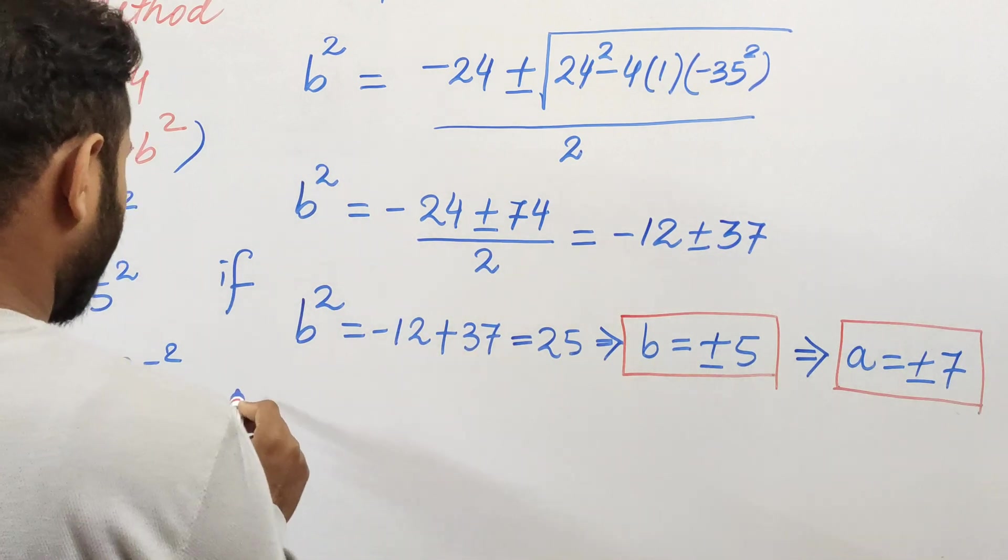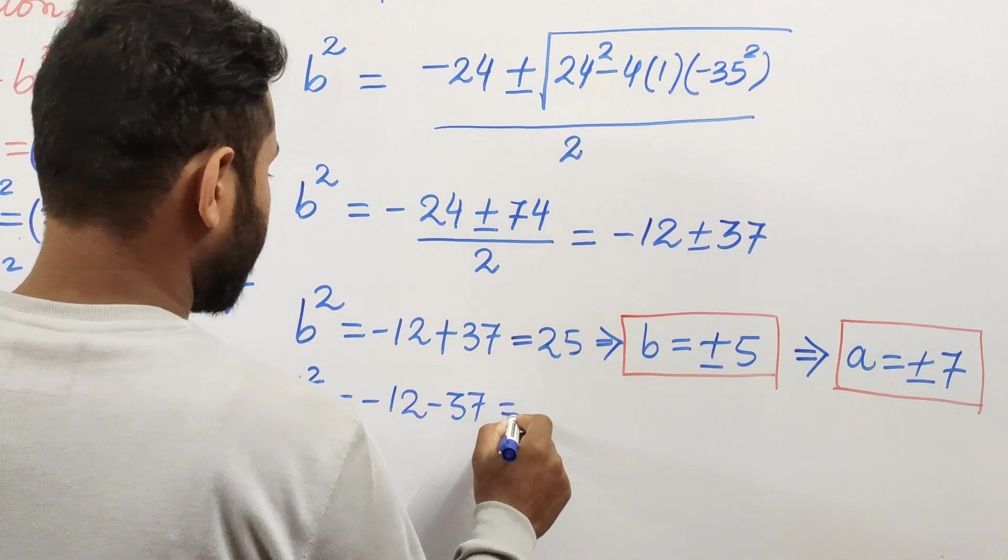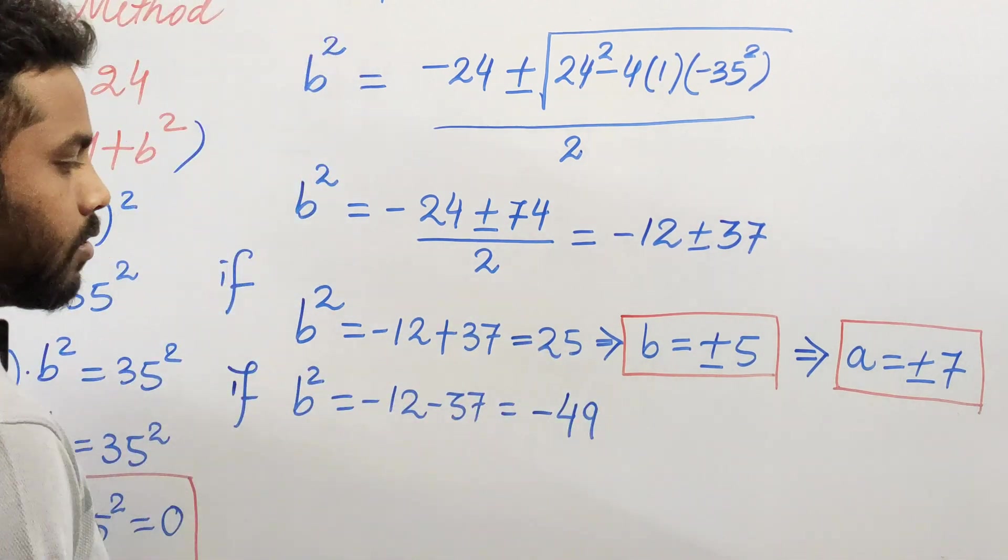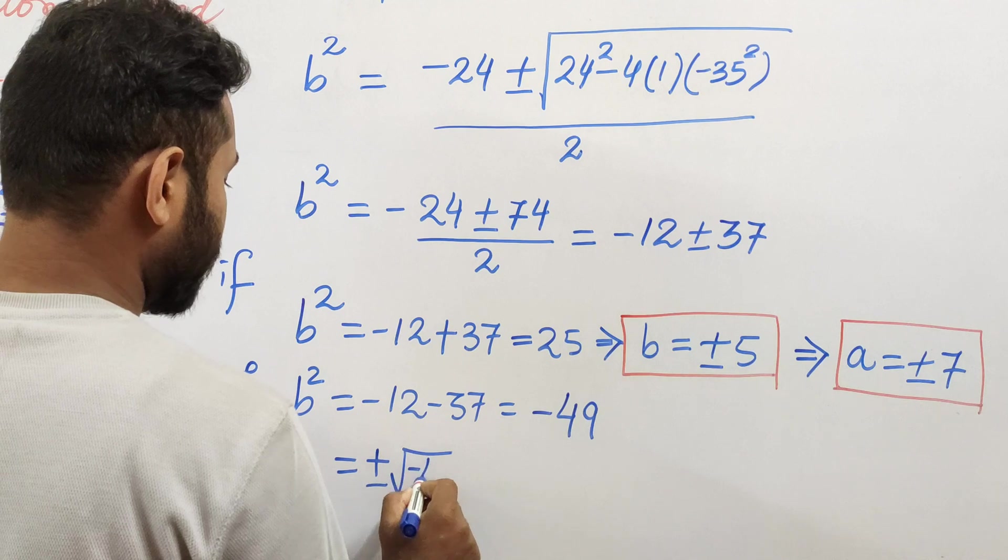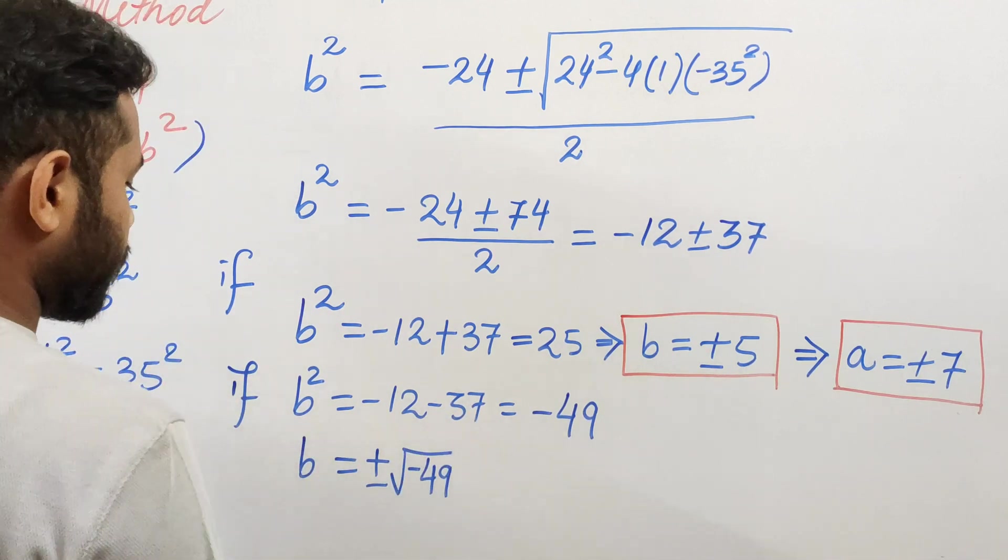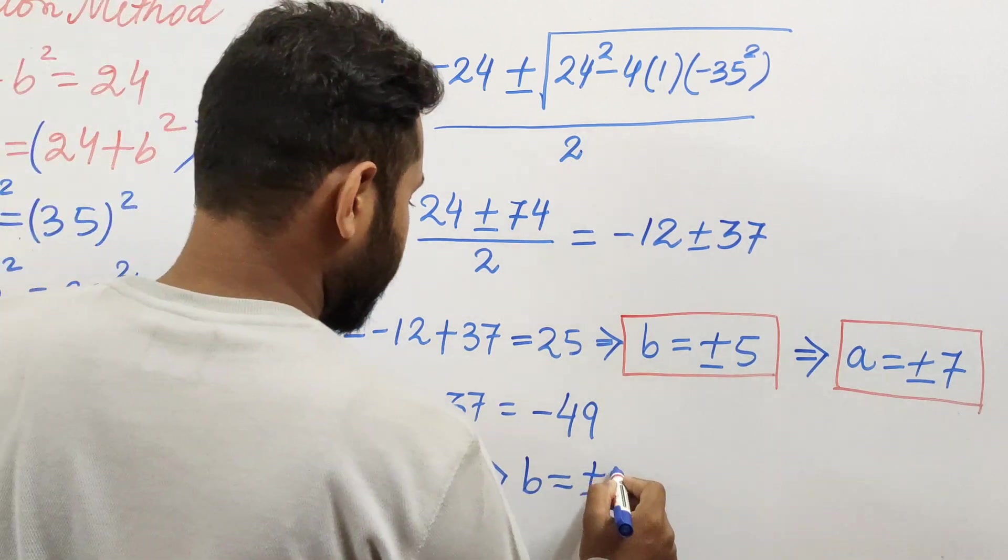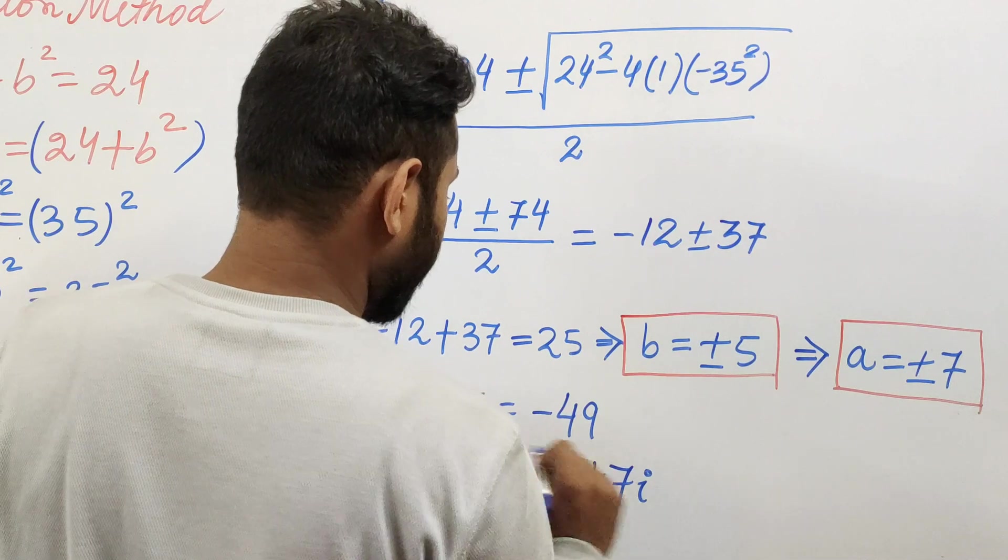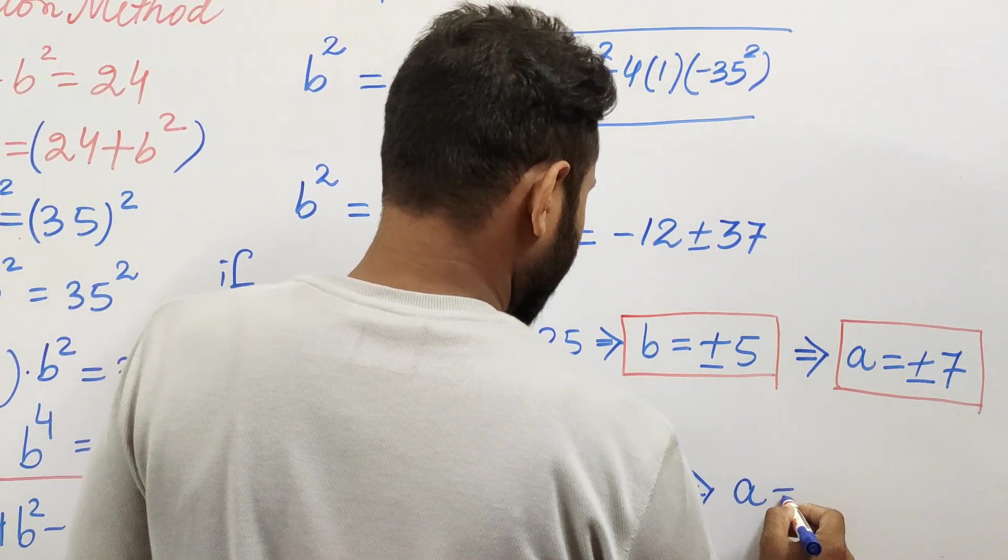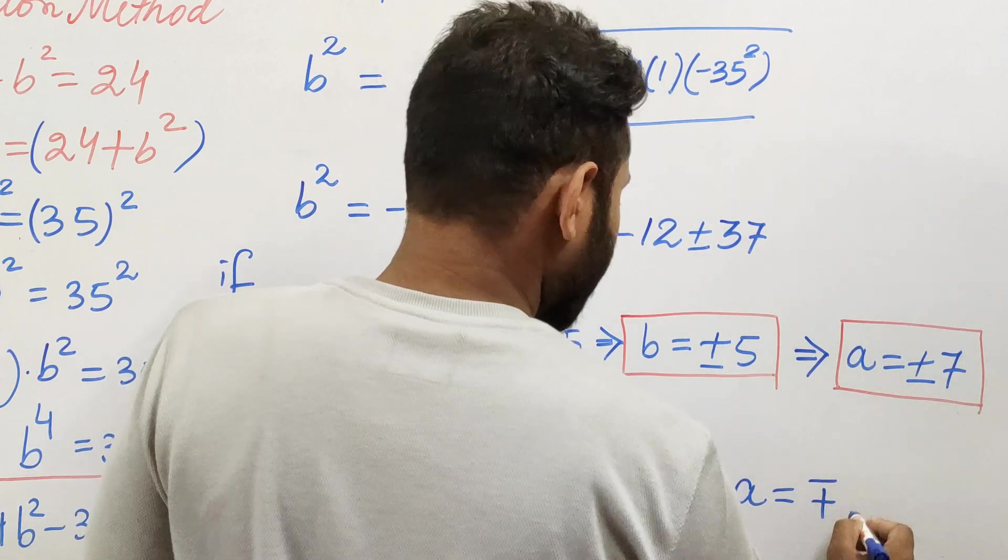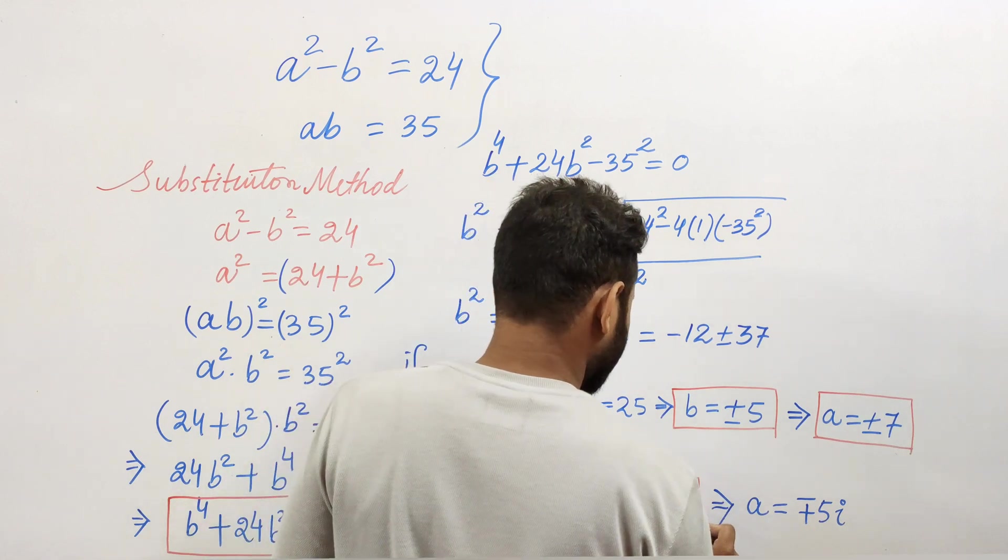Now let's take the second root. If b² = -12 - 37 = -49, it's getting complicated. B will be ±√(-49). So this is a complex solution. Unfortunately, b = ±7i, where i is the imaginary number. If b is ±7i, then a is going to be ∓5i. So this is our second pair of solutions, which is very strange, but yes, we have it.